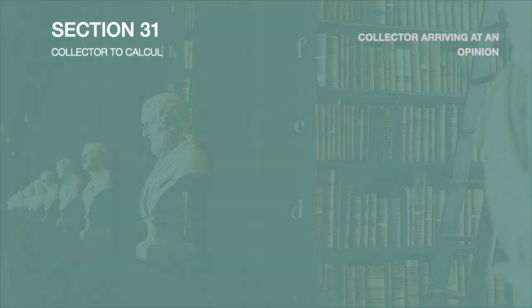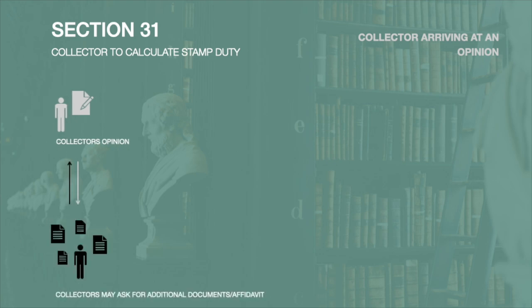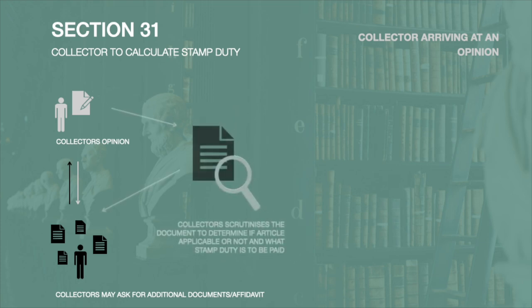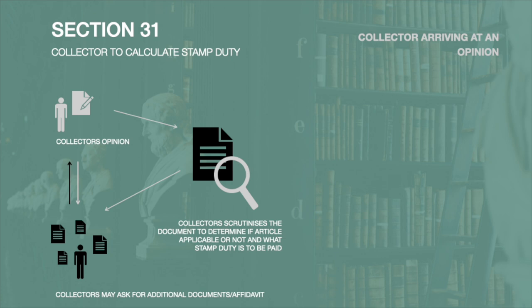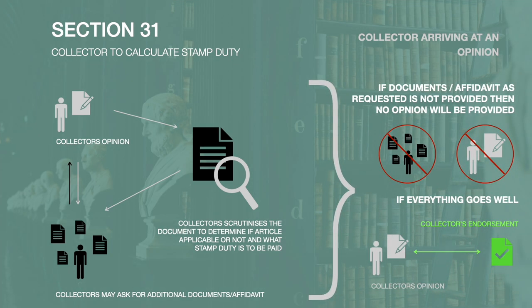Once the application is submitted along with the prescribed fees, the collector may ask for certain additional documents including an affidavit to prove the facts and circumstances affecting the calculation of stamp duty, in order for the collector to determine whether an article is applicable or not and if applicable, what the duty would be. The collector has the right to refuse to proceed with the application until such documents and affidavits are provided to him.